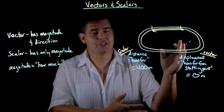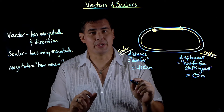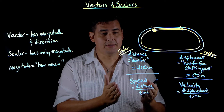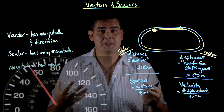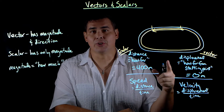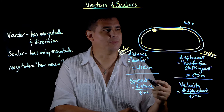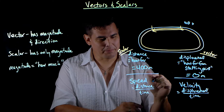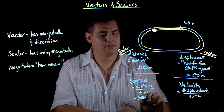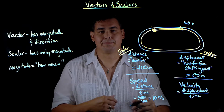Now let's look at another measurement: how fast you're going. There are two options — one is a vector, one is a scalar — speed versus velocity. Speed is a scalar; it doesn't have direction attached to it. In your car, you have a speedometer because the number on there just tells you how fast you're going, not what direction. Speed is distance divided by time. So if you ran 400 meters in 40 seconds, your speed is 400 divided by 40, which is 10 meters per second.